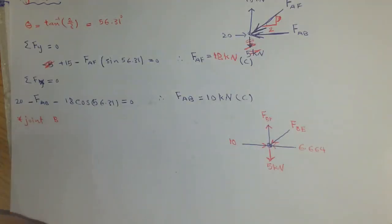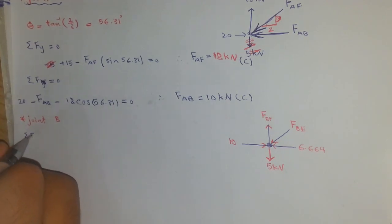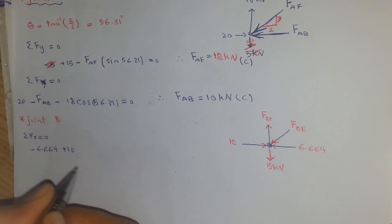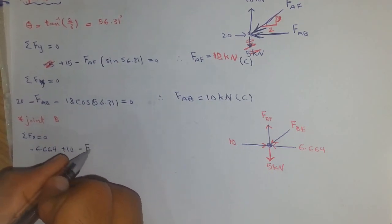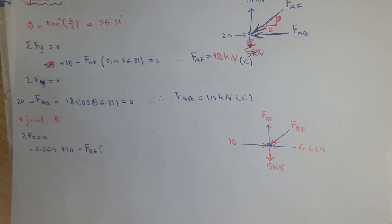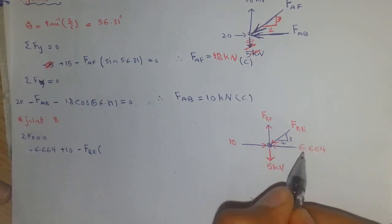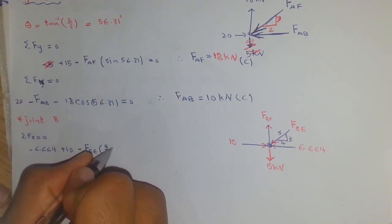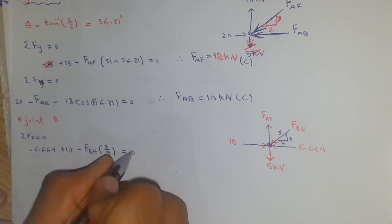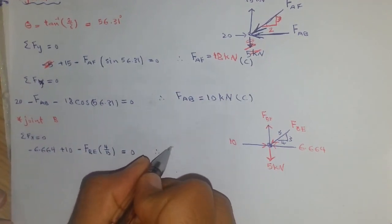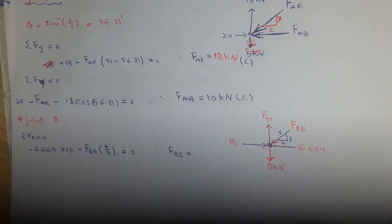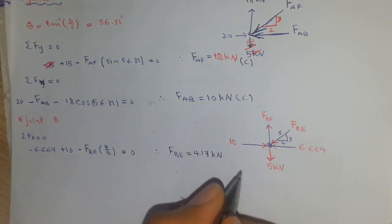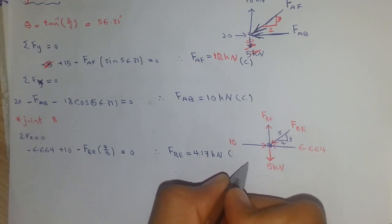Turning to joint B: summation of Fx equals zero gives minus 6.664 plus 10 minus F_BE multiplied by its horizontal component of 4 over 5 equals zero, where the member geometry gives sides of 4, 3, and 5. From this we get F_BE equals 4.17 kilonewtons, and that is compression.